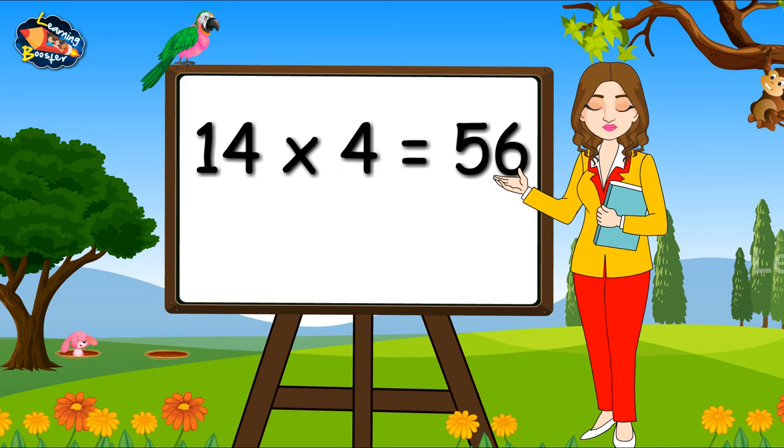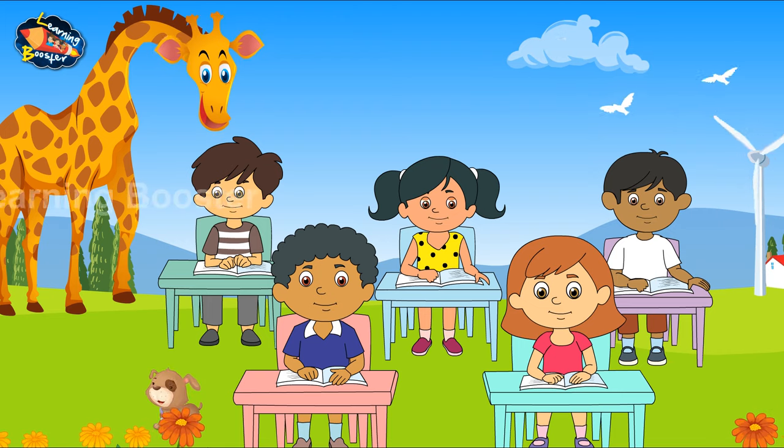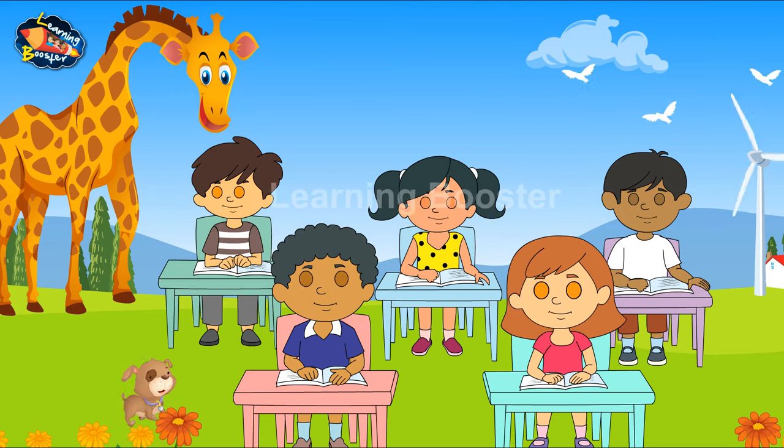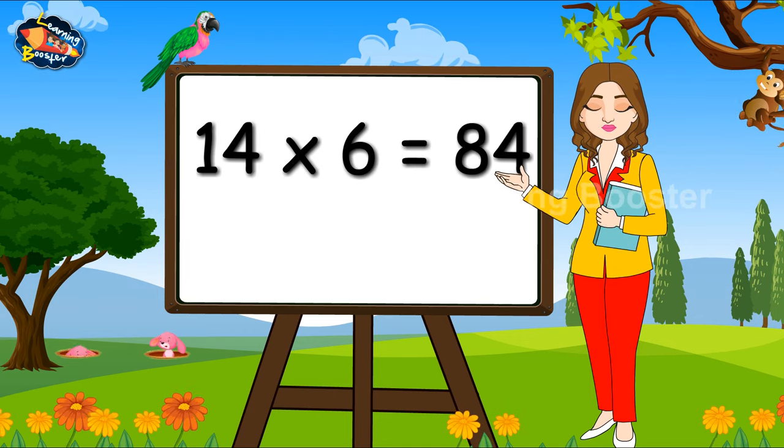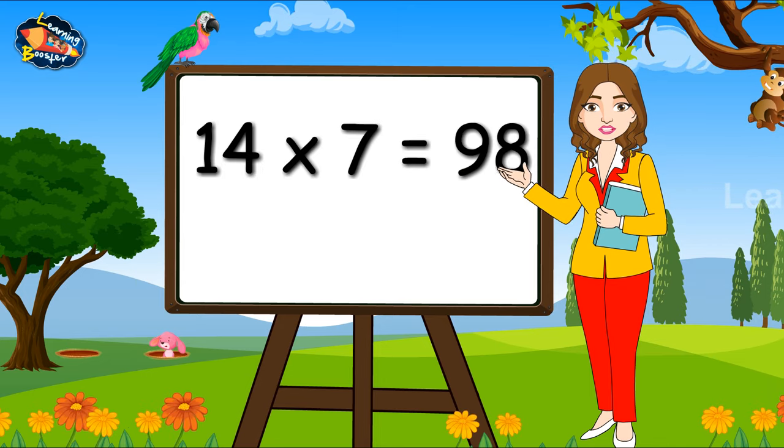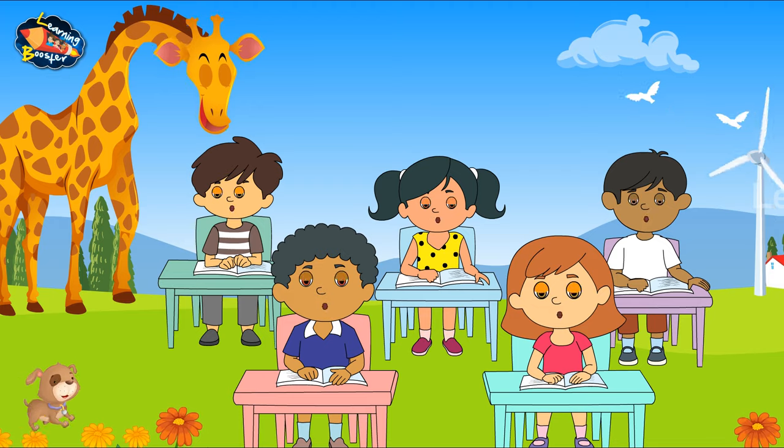14 4's are 56, 14 5's are 70, 14 6's are 84, 14 7's are 98.